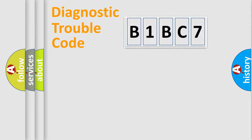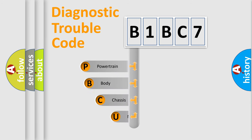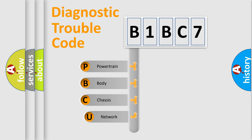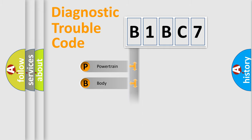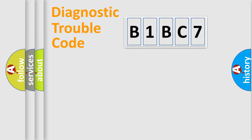Let's do this. First, let's look at the history of diagnostic fault code composition according to the OBD-II protocol, which is unified for all automakers since 2000. We divide the electric system of the automobile into four basic units: Powertrain, Body, Chassis, and Network.